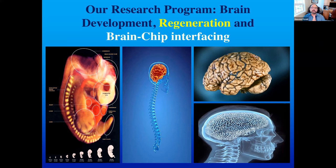Today I will share some work in progress in the regeneration arena — how we are using brain-chip interfacing technologies to promote regeneration. In the peripheral nervous system, regeneration does occur, and we'll use that as a model. Finally, I'll talk about brain-chip interfacing technologies: how we can use semiconductor and silicon chip technologies to record from large networks of brain cells, and whether we could regain some lost brain function using these technologies.